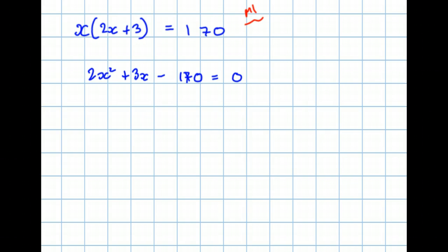Now, I could factorise, but this is the calculator paper. Let's use the formula. A is the coefficient, the number in front of x squared. B is the number and sign in front of x. And C is the number and sign of the constant term, the number.